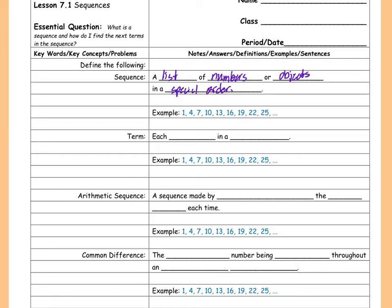Terms: each number in a sequence. So every single term in the sequence, every single number in the sequence, is a term. This sequence right here in front of me has one, two, three, four, five, six, seven, eight, nine terms so far.